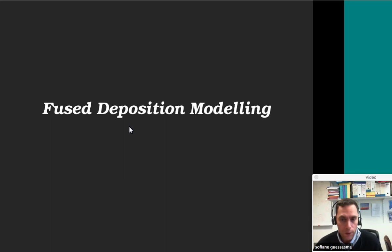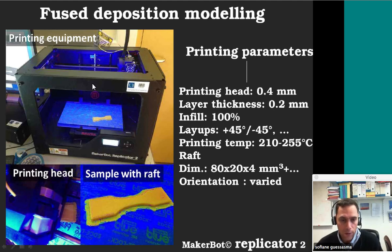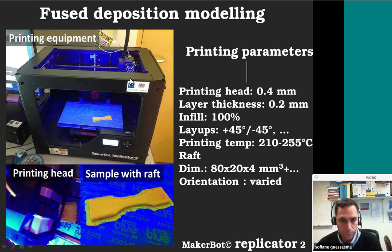Now let's move to fused deposition modeling. This is another type of technology based on the fused filament. This is a printer used to print different polymer structures — it's called the MakerBot Replicator 2. There are different characteristics and parameters you need to set before printing. The printing head has different types of nozzles with resolutions from typically 0.1 to 0.4 millimeter. You need to specify the layer thickness — if it's 0.2, you're going to have a more cohesive structure.